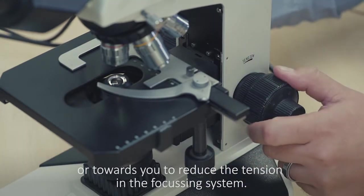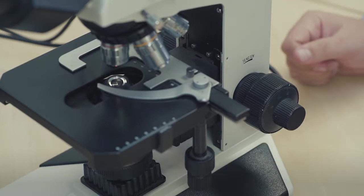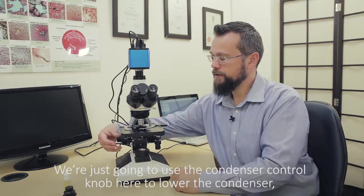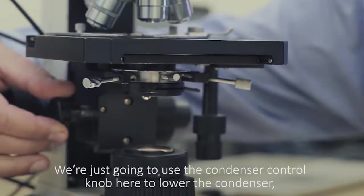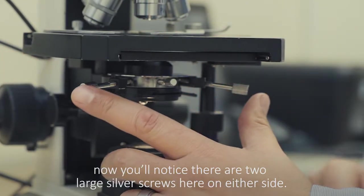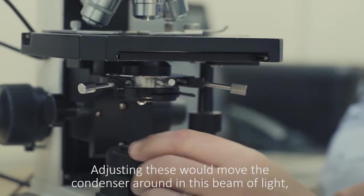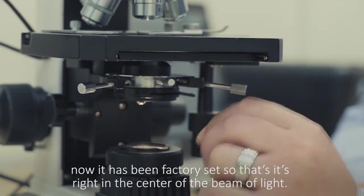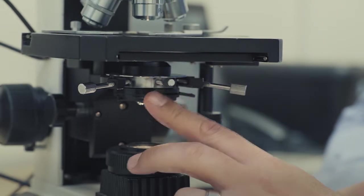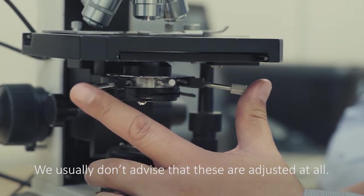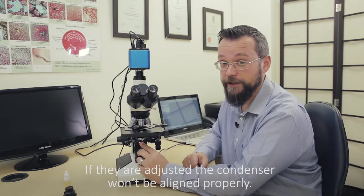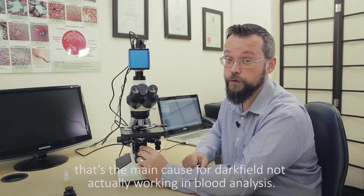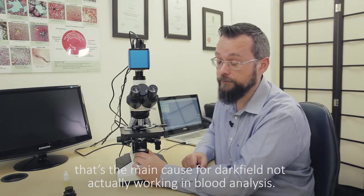Let's have a look at the condenser unit under the stage in a bit more detail. We're just going to use the condenser control knob here to lower the condenser. You'll notice that there are two large silver screws here on either side. These are the centering knobs. Adjusting these would move the condenser around in this beam of light. It has been factory set so that it's right in the center of the beam of light, so we usually don't advise that these are adjusted at all. If they are adjusted, the condenser won't be aligned properly and you would probably find that your darkfield doesn't work properly. That's the main cause for darkfield not actually working in blood analysis.